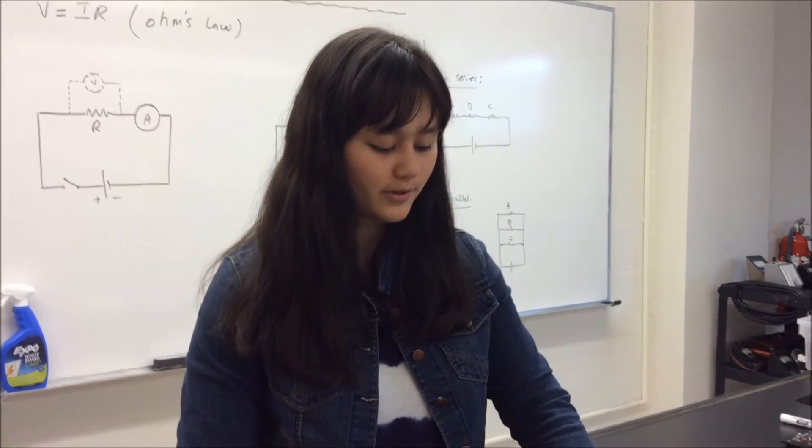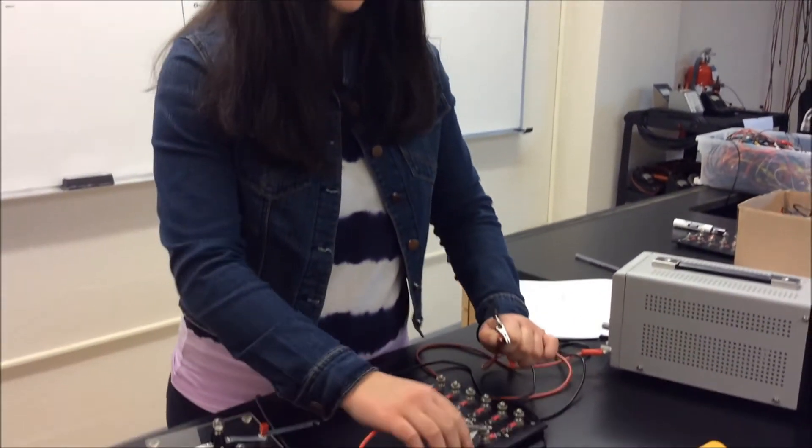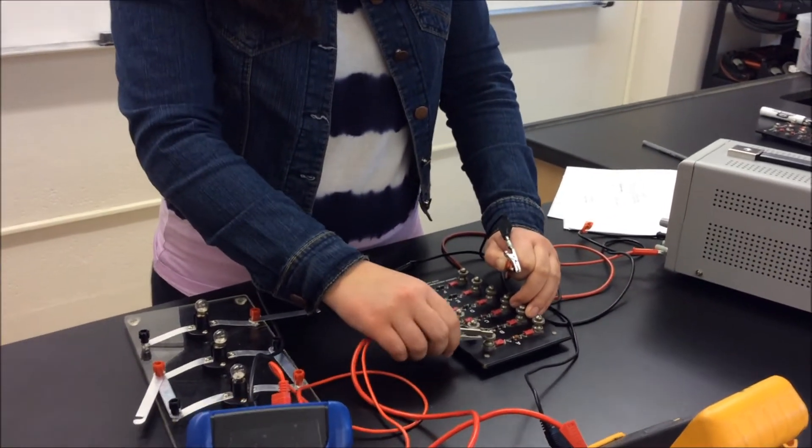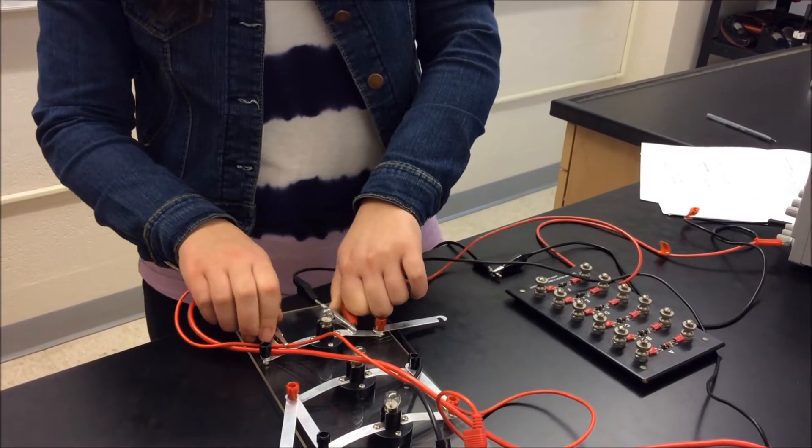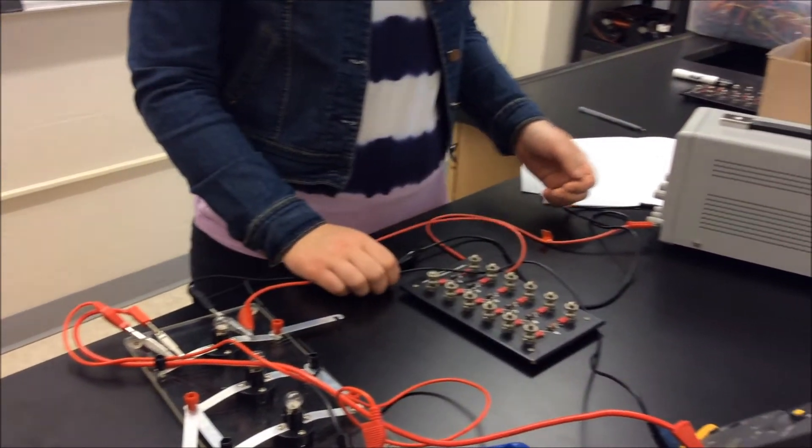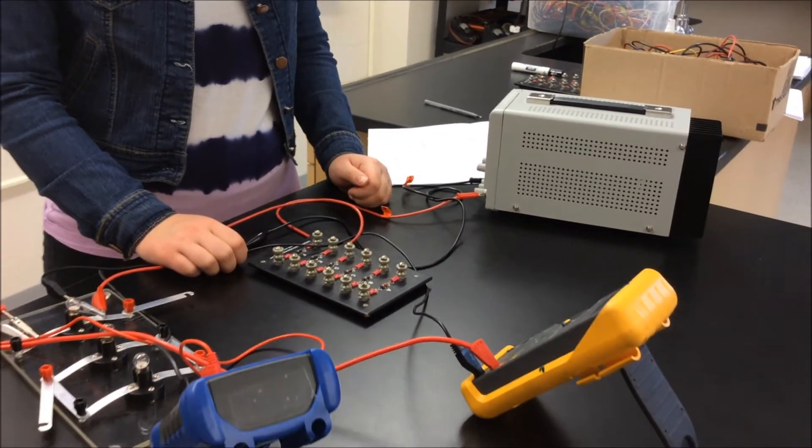The next thing that you're going to do is replace the resistor with a lightbulb. Like that. And you are going to repeat the same steps that you did before by increasing the power supply and seeing how that changes the voltage and the current. And then from that data table, you're going to construct another voltage versus current graph.